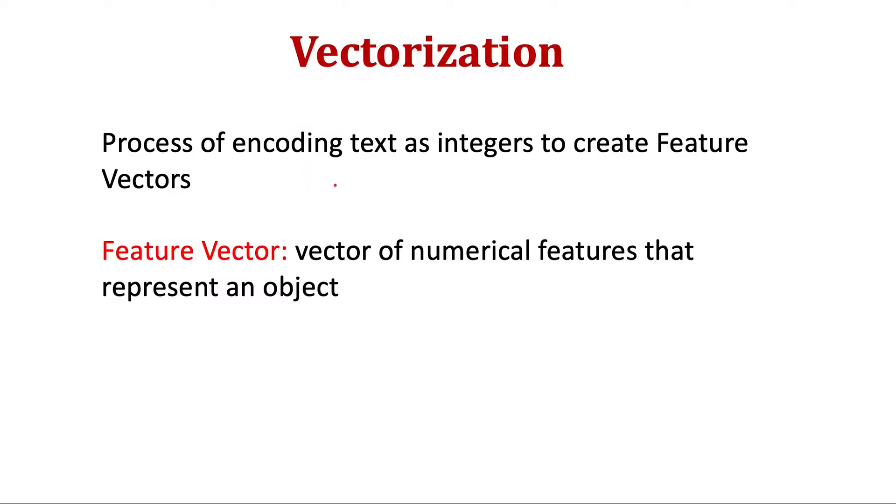So once again, vectorization is the process of encoding text as integers to create feature vectors. And if you don't know what are feature vectors, then these are just vectors of numerical features that represent an object. For example, we may have a word, let's say W1, or let's say it's cat.